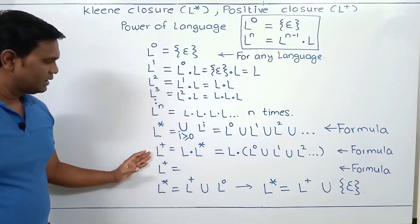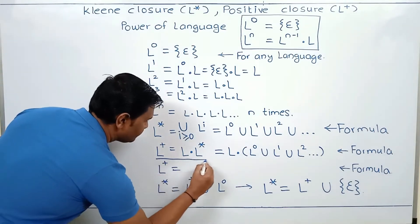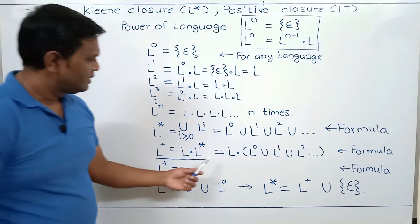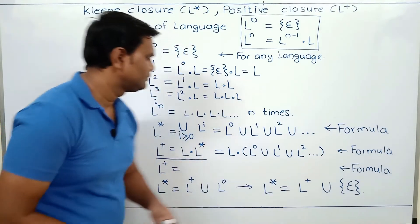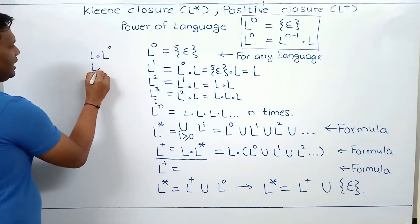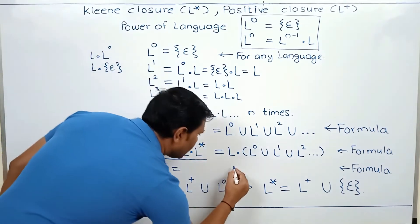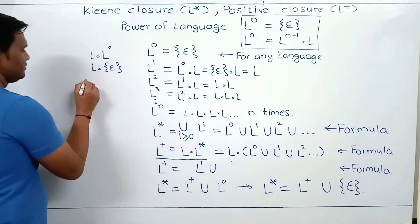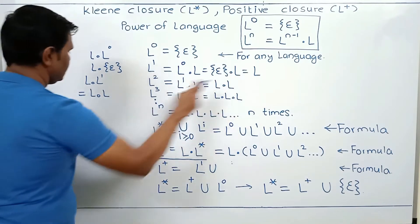Then we calculate L plus, or the positive closure of the language. The main formula for positive closure is L plus equals L dot L star. So it becomes L dot the quantity L power 0 union L power 1 and so on. Now L dot L power 0 is L dot epsilon, since L power 0 is epsilon, giving L power 1. Then L dot L power 1 is L dot L, which is L power 2.